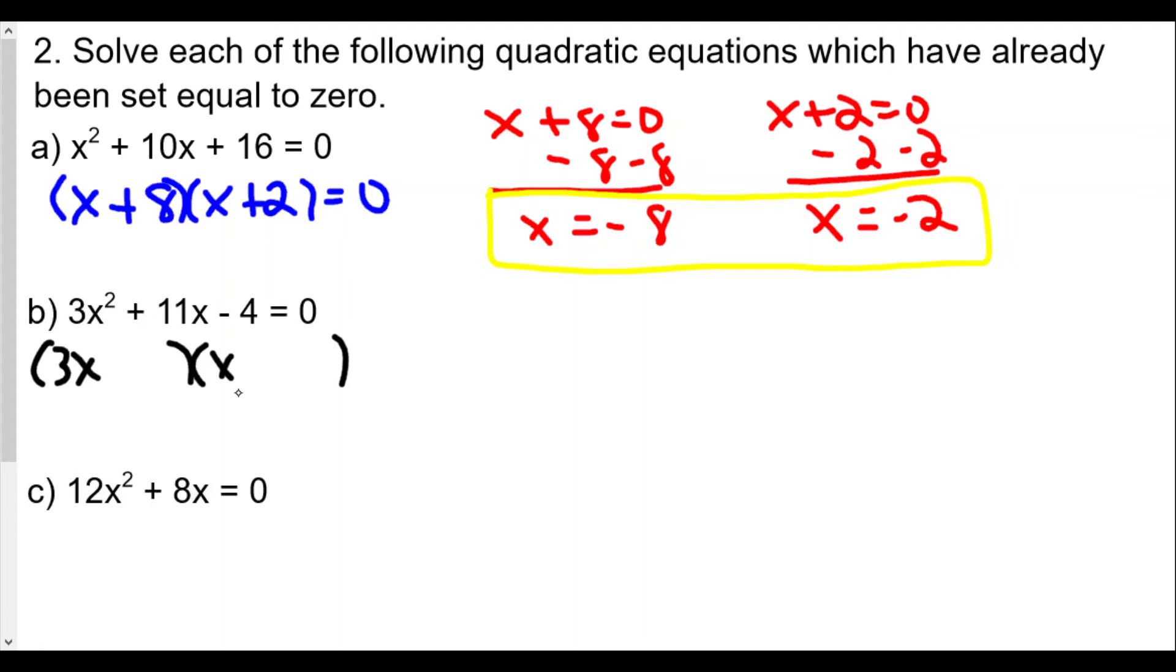Now I know that I want the two numbers I choose for the back ends to multiply to 4, and when I do my distribution, the numbers also need to add to 11. I'm going to put my 1 here and my 4 here. The reason I do this is because if I multiply 3 times 4, I get 12, and 1 times 1 is 1. Therefore, 12 minus 1 gives me the 11 I'm looking for.